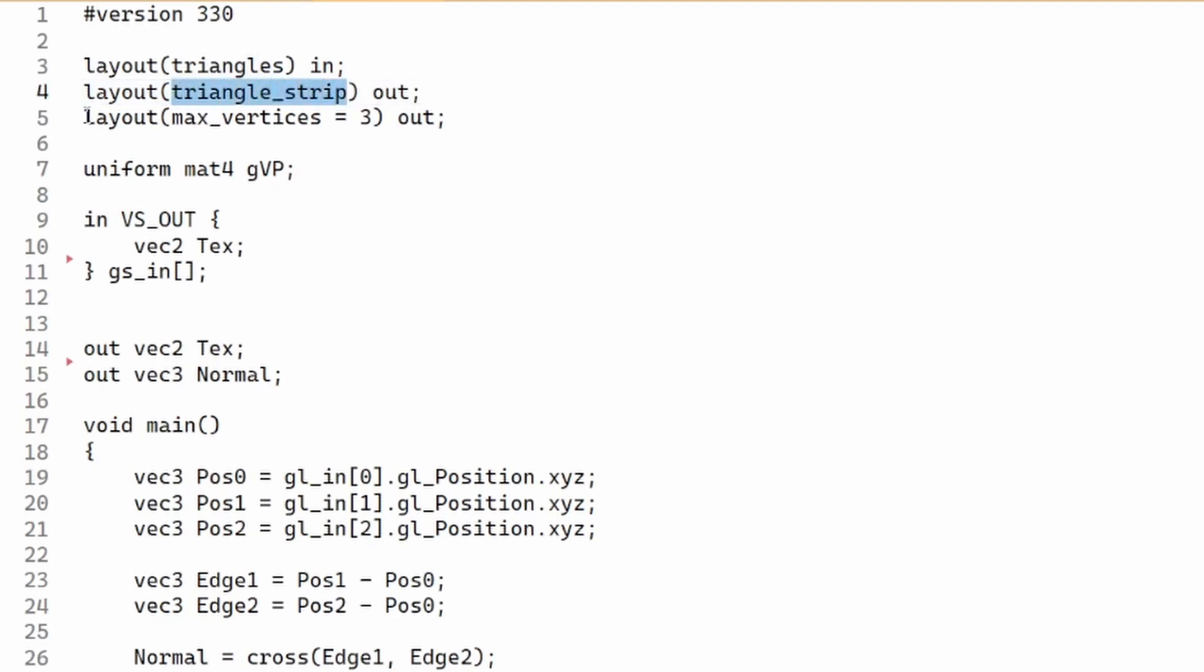And finally, we have to declare the maximum number of vertices that this geometry shader can output. This is important for the shader compiler because the dynamic nature of the GS presents a challenge to shader compilation. We can get the maximum number supported by the current platform by querying for GL_MAX_GEOMETRY_OUTPUT_VERTICES, but this value is guaranteed to be at least 256, so we have plenty of room here.